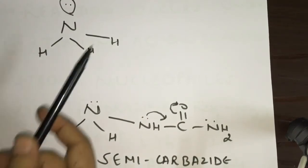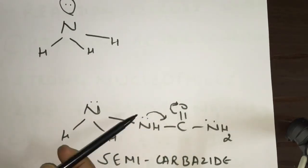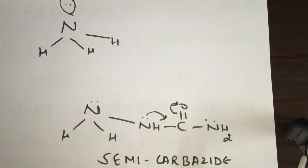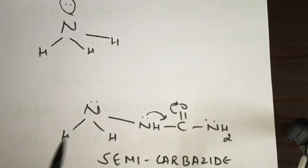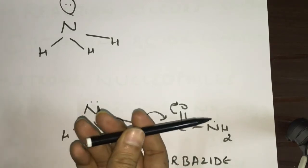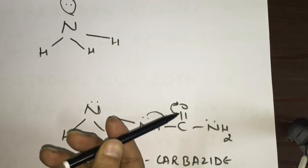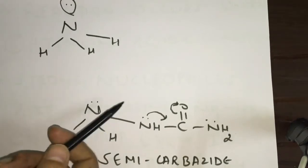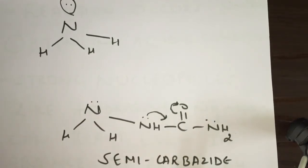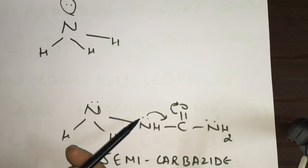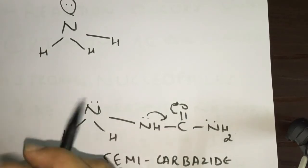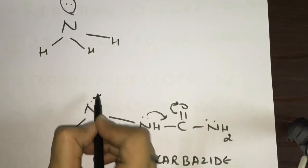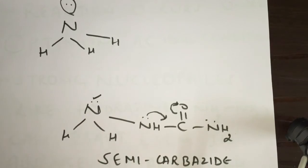Semicarbazide is derived from ammonia by removing hydrogen and adding a group, making it semicarbazide. Now remember: semicarbazide is a nucleophile. However, two of its nitrogen atoms have lone pairs that are in conjugation with the carbonyl π-bond, so those lone pairs are delocalized and are not as nucleophilic. The third nitrogen atom is the most nucleophilic because its lone pair is not delocalized.